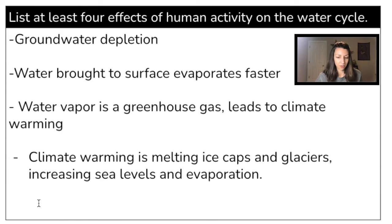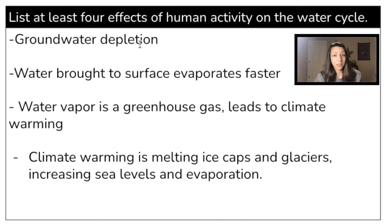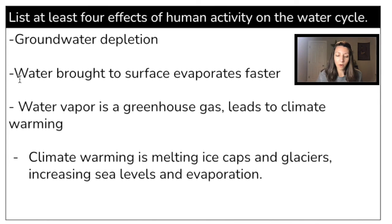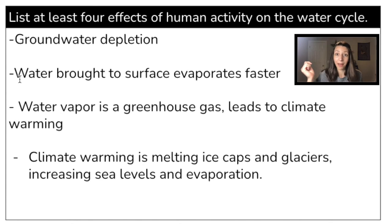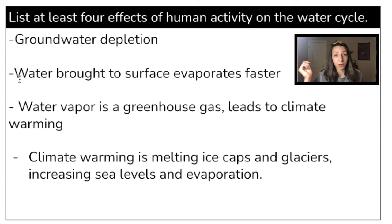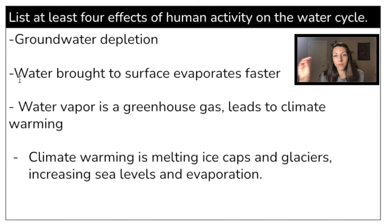Lastly, four effects of human activity on the water cycle. You could say something like groundwater depletion, or that water brought to the surface evaporates faster. When it's evaporated, water vapor is a greenhouse gas, which can lead to climate warming. Climate warming melts ice caps and glaciers, which increases sea levels and evaporation. These reasons are all connected, but you could think about others including pollution, runoff, acid rain, and acidification of the ocean — all of these things have an impact on the water cycle.